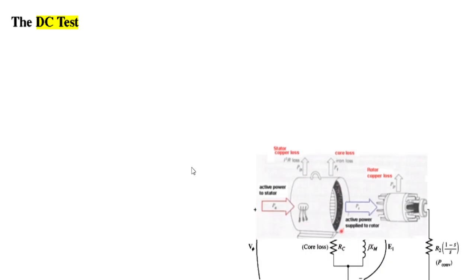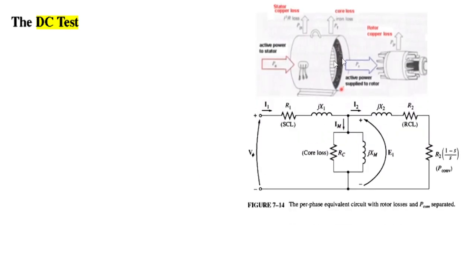The DC test involves the induction motor which has a stator and a rotor. This is a combined per-phase equivalent circuit showing a portion of the rotor winding and the stator winding.